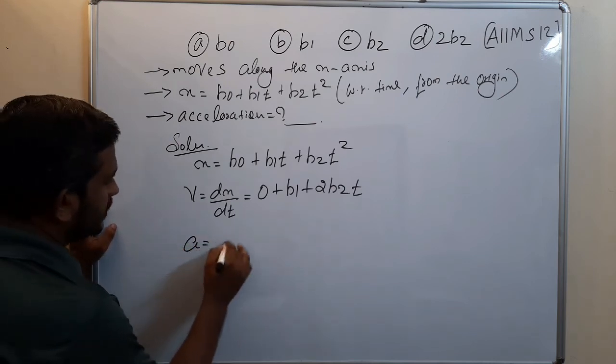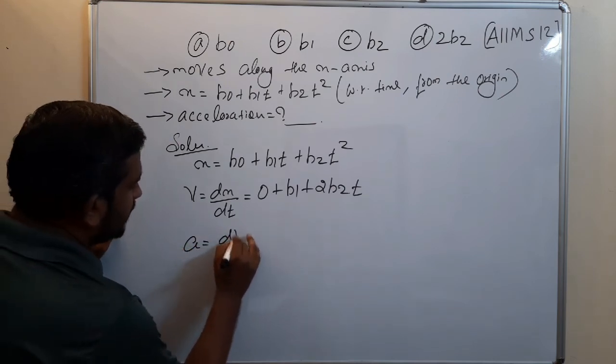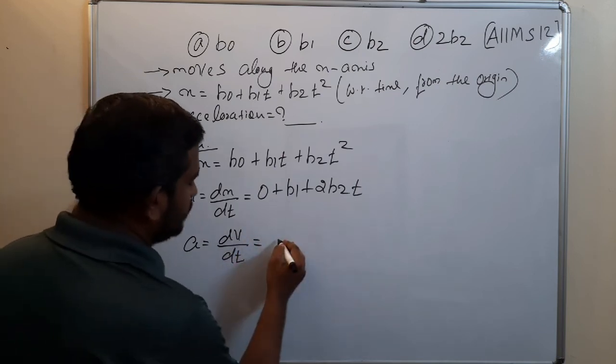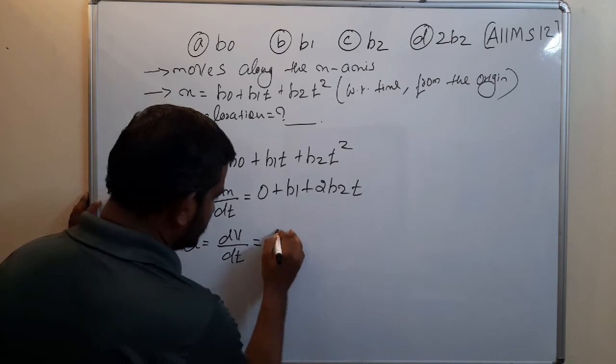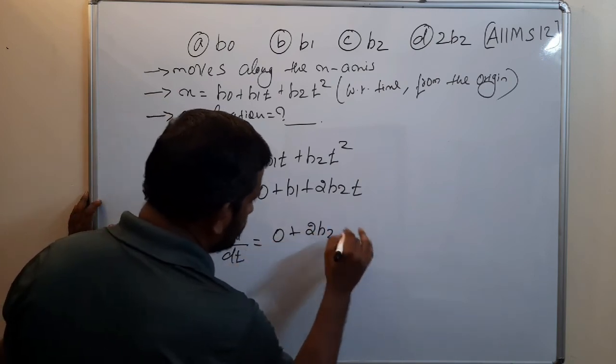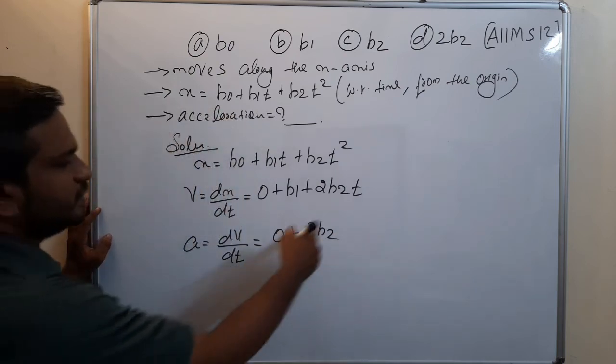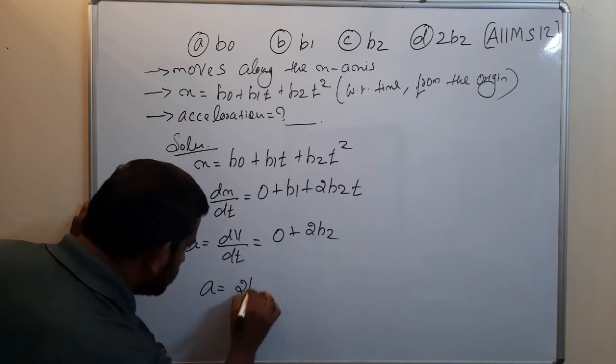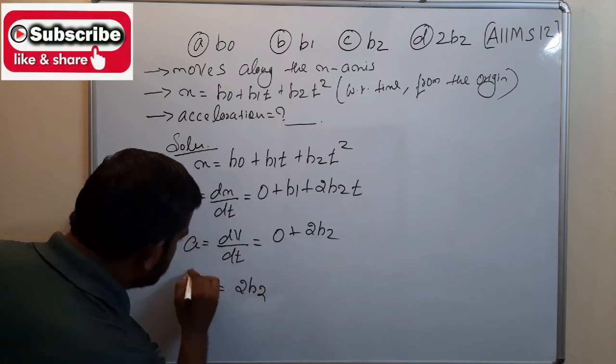Acceleration is equal to dv by dt, rate of change of velocity. b1 is a constant, so differentiation 0 plus that is 2 b2 times the differentiation of t is 1. So acceleration equals 2 b2.